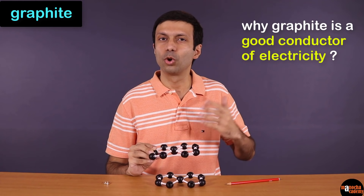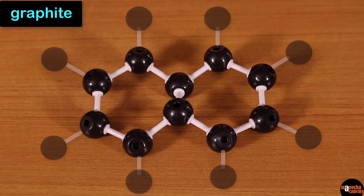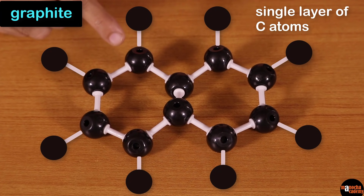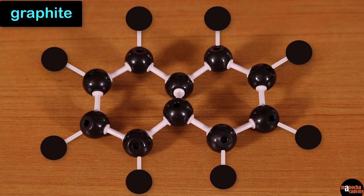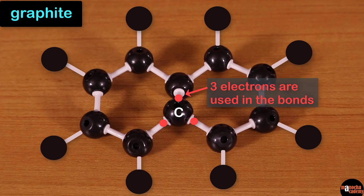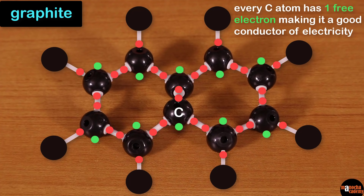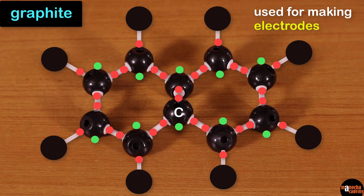Now why is graphite a good conductor of electricity? Carbon has four valence electrons. In graphite, each carbon atom is bonded to three other carbon atoms, so three electrons are used in the bonds and one electron is free. So every carbon atom in graphite has one free electron, and the presence of a large number of free electrons makes graphite a good conductor of electricity. Which is why graphite is used for making electrodes.